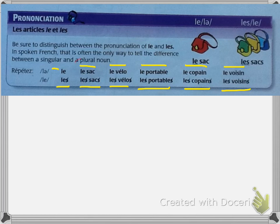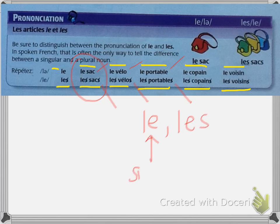What they're talking about — the only way to tell the difference — is pronunciation. Listen: le sac versus les sacs, le vélo versus les vélos, le portable versus les portables. The le versus les is telling you whether it is singular or plural, so that difference in how you say le and les is very important.